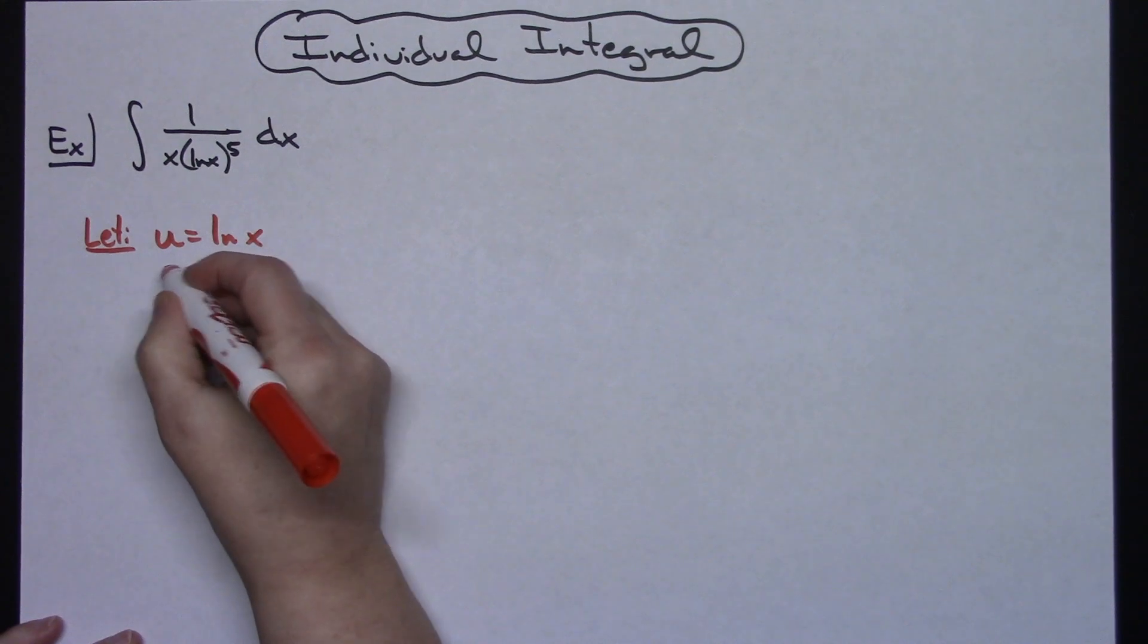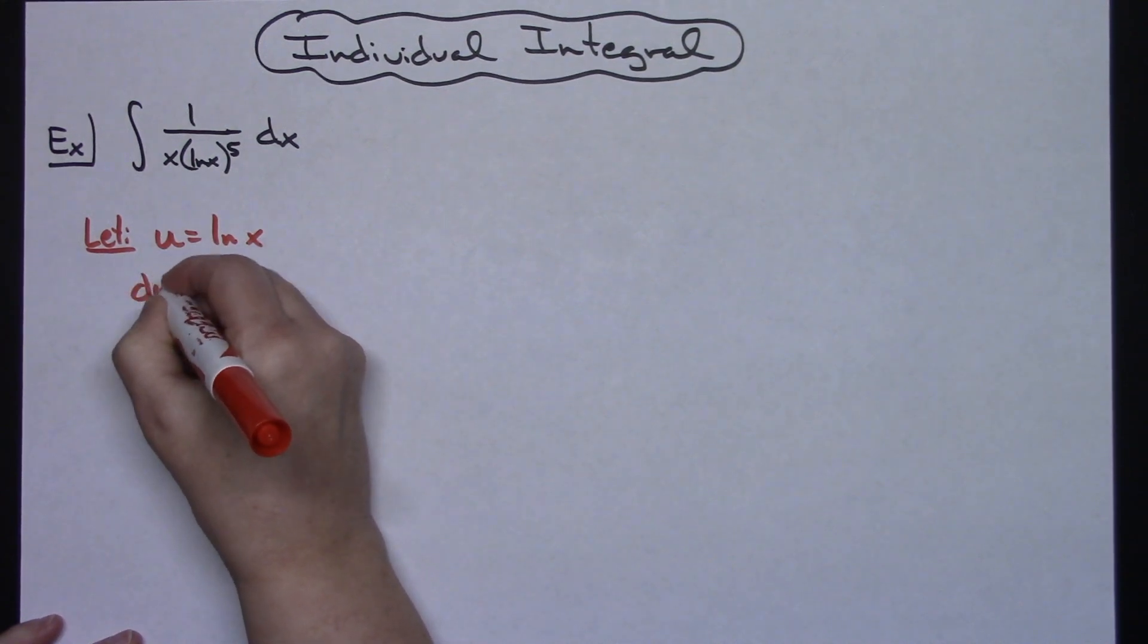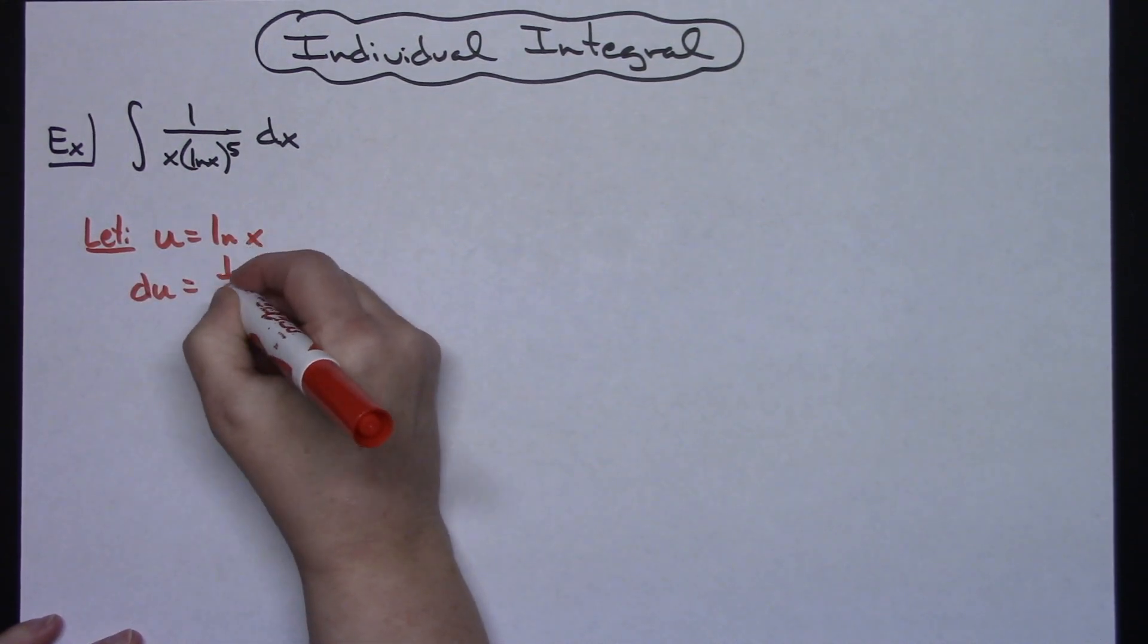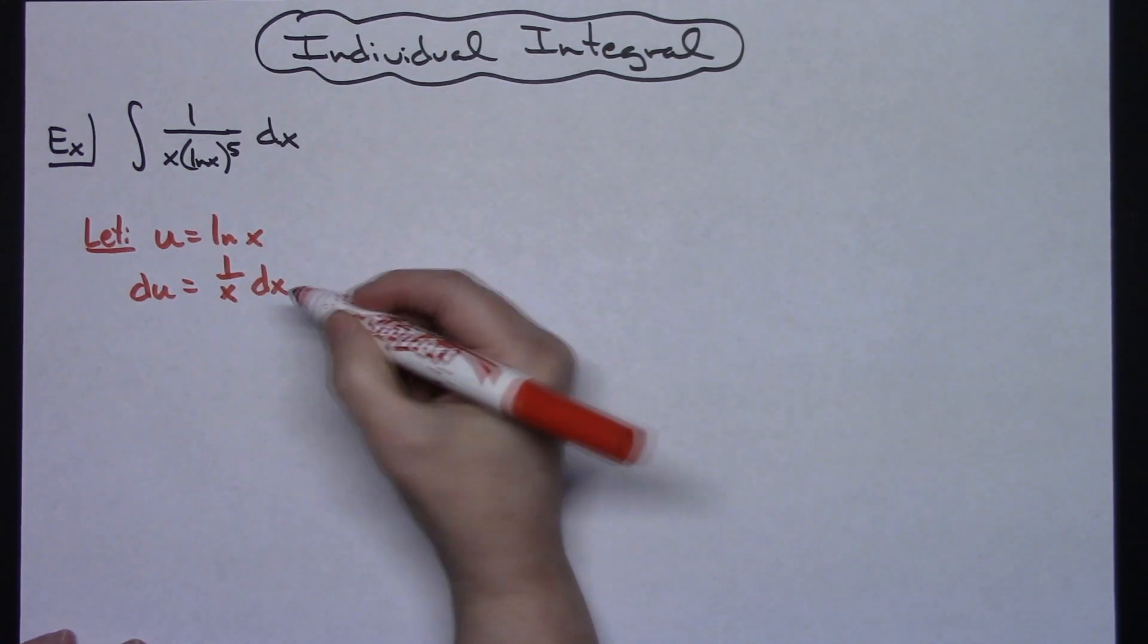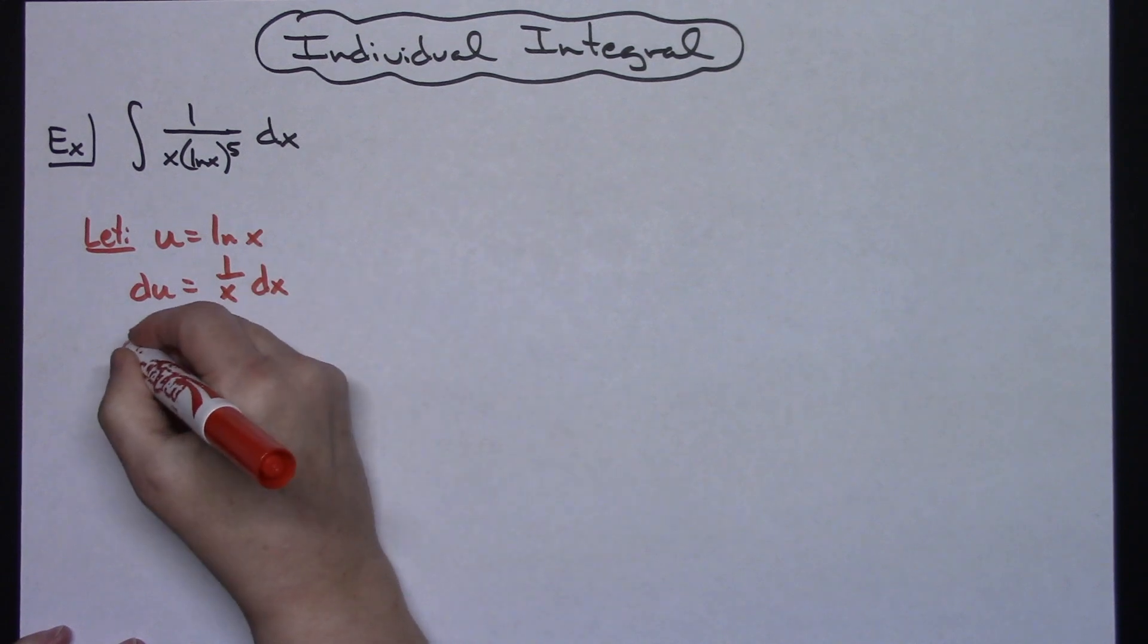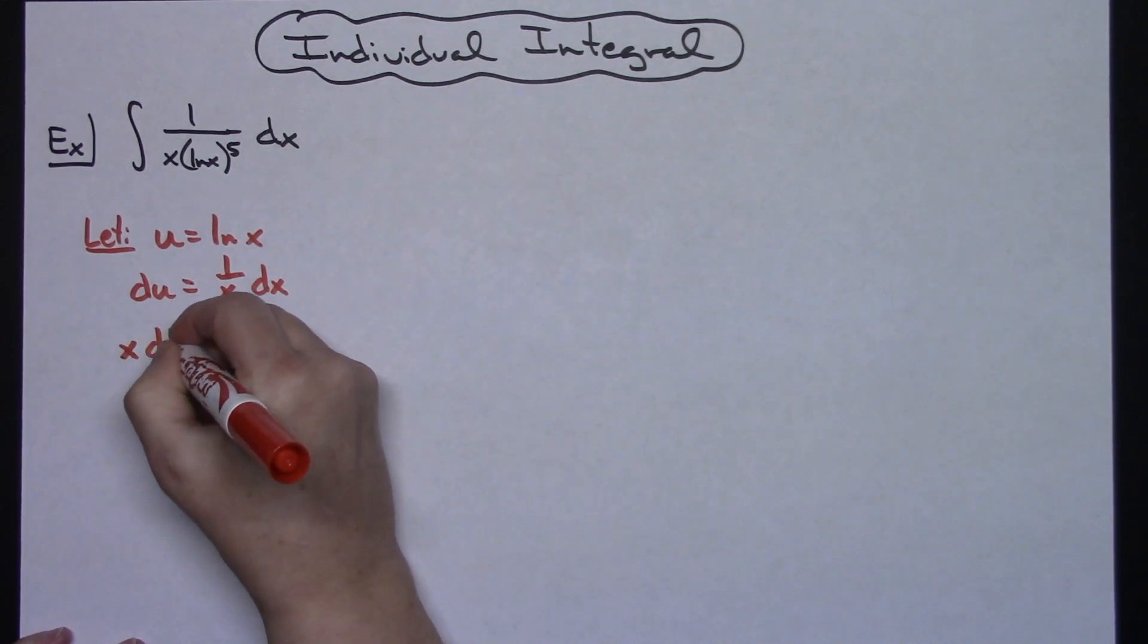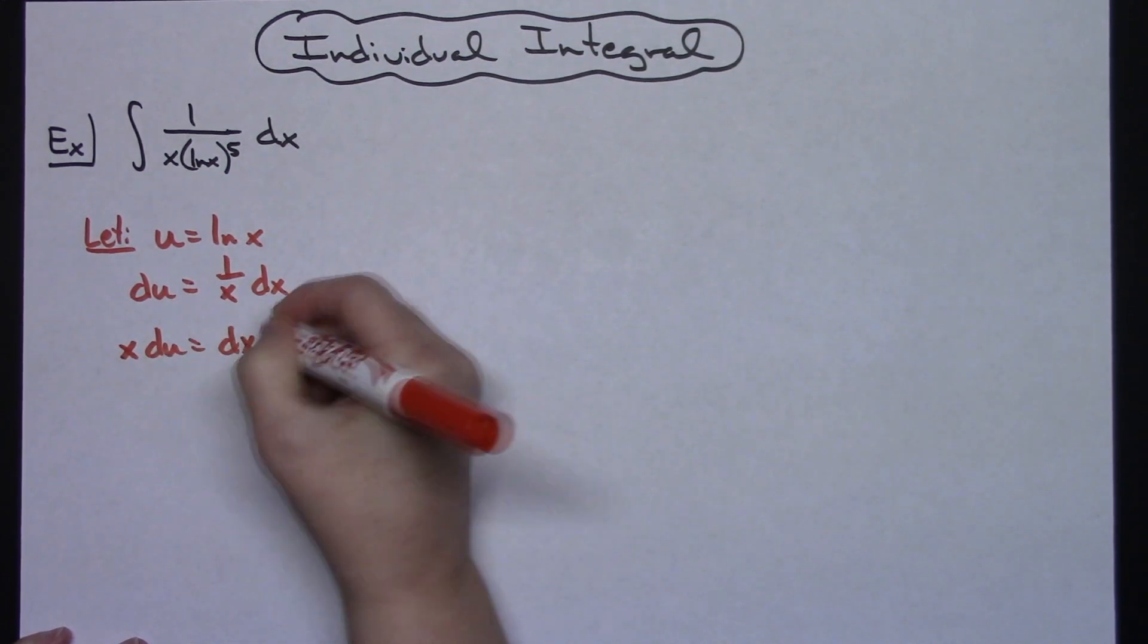Alright next step is to take the derivative of both sides. So I'll have du is equal to 1 over x dx and then I'm going to go ahead and solve all the way down for dx which means I'll multiply both sides of the equation by x. I will have x du is equal to dx.